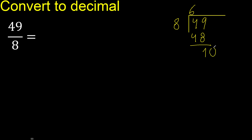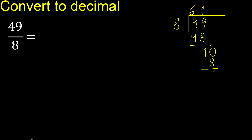There is no next number, therefore complete with 0. Add the decimal point. Now 10: 8 multiplied by 2 is greater, 8 multiplied by 1 is 8. 10 minus 8 is 2.